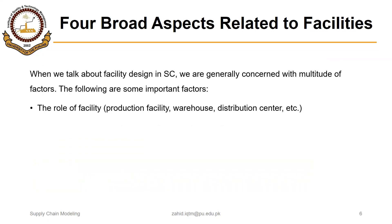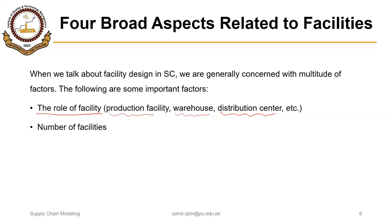There are four broad aspects related to facilities. When we talk about facility design in supply chain, we are generally concerned with a multitude of factors. The first one is the role of the facility — so the facility we are going to design or locate could be a production plant, a warehouse where things are stored, a distribution center, a retail outlet, a service center, and so on. That is the fundamental point to be considered. The second important factor is the number of facilities — for example, how many plants, warehouses, distribution centers, or retail outlets we are going to have in the supply chain.